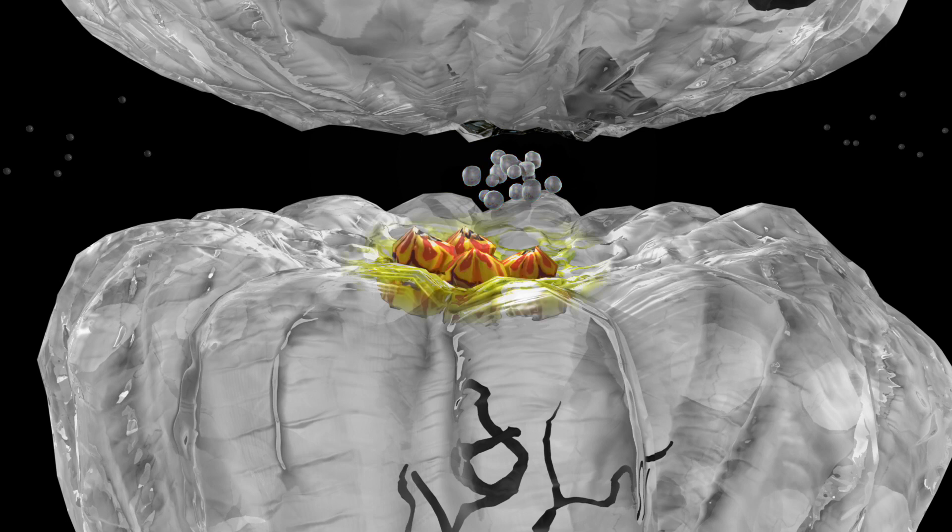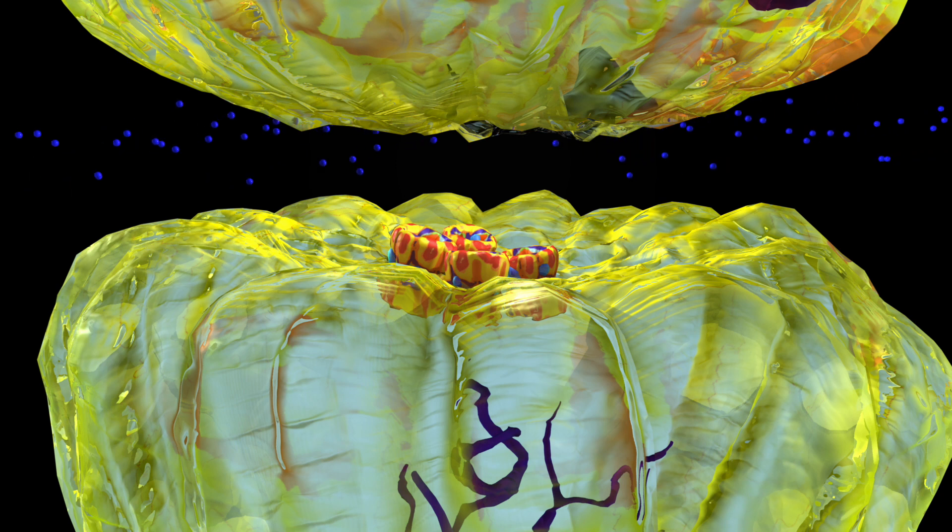This is the GABA receptor. When GABA binds, it opens up the receptor and allows chloride to enter.